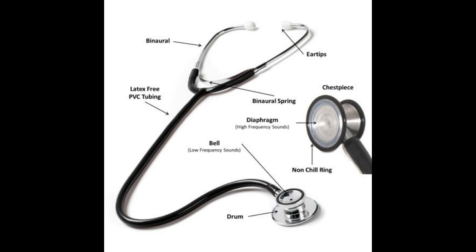The second part is the diaphragm. The diaphragm of the stethoscope is the large circular end of the chest piece. The diaphragm allows listening to an area of the patient's body and picks up high frequency sounds.